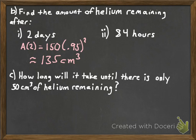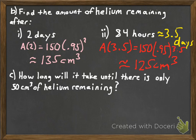To figure out how much remains after 84 hours, we need to convert 84 hours to days, so divide that by 24, which gives you 3.5 days. That means 3.5 is what we're going to plug into the function this time. It gives you about 125 cubic centimeters to the nearest three significant figures.